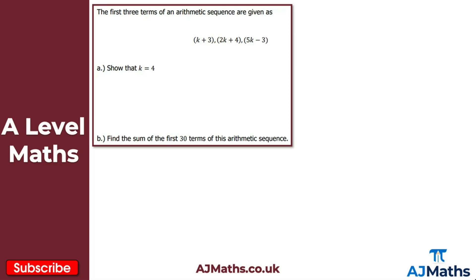For question 2, the first three terms of an arithmetic sequence are given as k plus 3, 2k plus 4, and 5k minus 3. For part A, we're asked to show that k equals 4. To answer part A, remember that the difference between the second and first term equals the difference between the third and second term. So: (2k plus 4) minus (k plus 3) equals (5k minus 3) minus (2k plus 4).